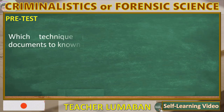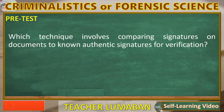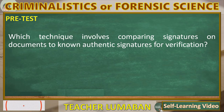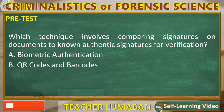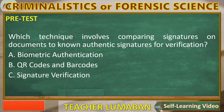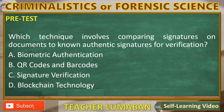Which technique involves comparing signatures on documents to known authentic signatures for verification? A. Biometric authentication. B. QR codes and barcodes. C. Signature verification. D. Blockchain technology.